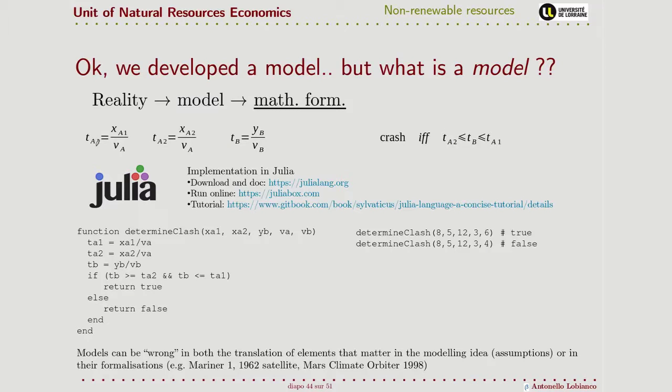The time needed for guy A1 to arrive at the crossing is given by the distance from the crossing to him divided by his speed. This is a very basic physical model. We claim that the crash will happen only if the time of guy B is between the time of the two guys that are bringing the mirror.